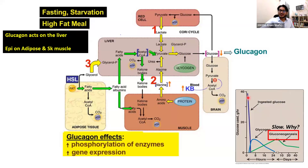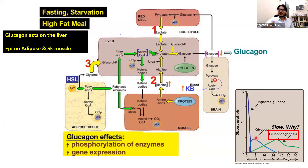This timeline shows that when you've ingested glucose, that finishes very quickly. Glycogen, when you're fasting, starts to kick in very quickly but then goes down quickly because your stores are limited — it happens quickly because it's activated by phosphorylation. Why does gluconeogenesis happen slowly? Because it's activated at the gene level.